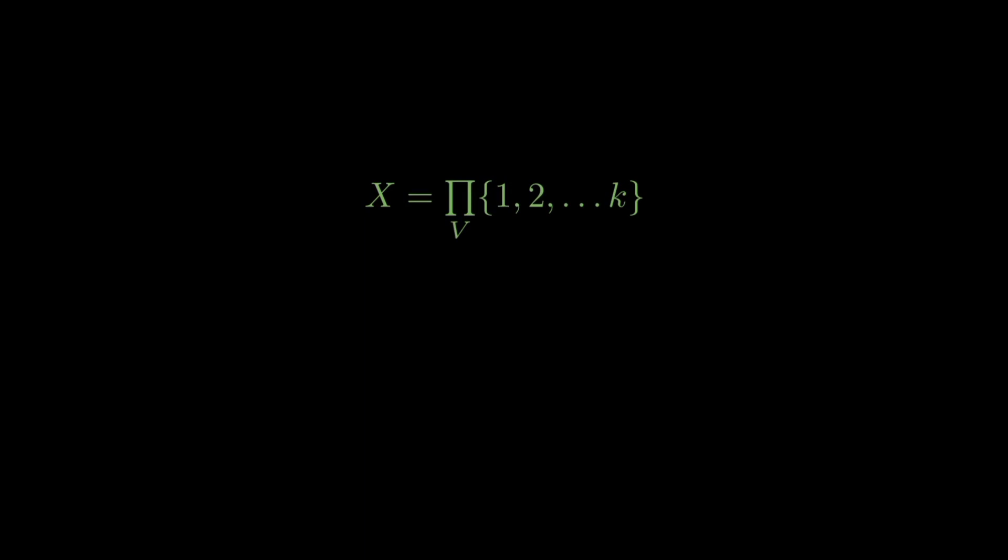Now since the product space is compact and any arbitrary family of closed subsets satisfy the finite intersection property, this intersection is non-empty. Hence we will have a k coloring of the graph.